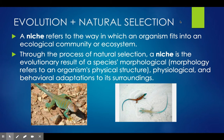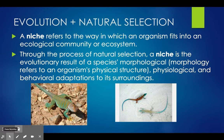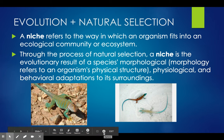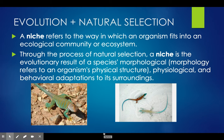When we talk about natural selection and evolution, we need to know what a niche is. A niche refers to the way in which an organism fits into a particular ecological community or ecosystem. Through the processes of natural selection, a niche is the evolutionary result of a species' morphological — morphology refers to an organism's physical structure — psychological, and behavioral adaptations to its surroundings.